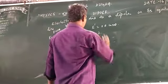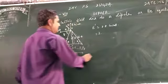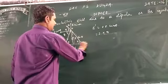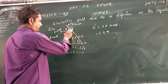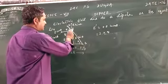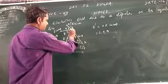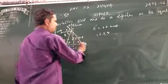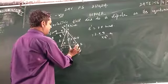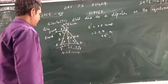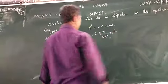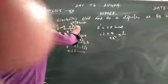Now, E = KQ divided by the separation squared. The separation between the point and the charge is XB. What is XB? This is your R and this is your L. So cos theta is B over H, where B is L and H is XB.